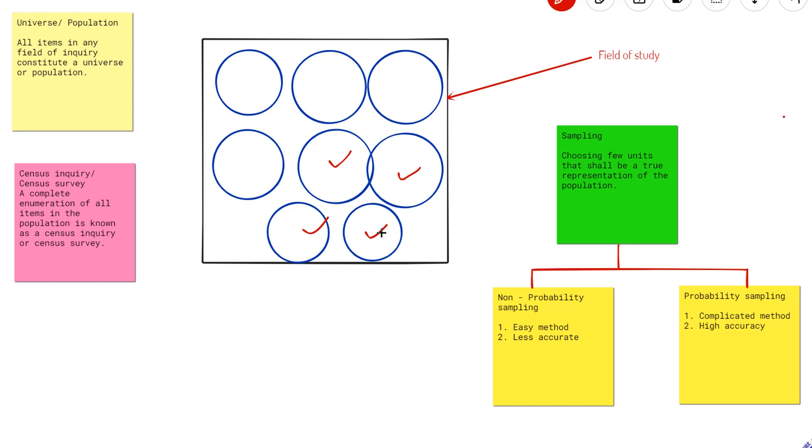Now the problem with sampling is that if the units are not uniform, then the accuracy of the collected data will be less. There are two methods of sampling: one is non-probability sampling and the other one is probability sampling. Non-probability sampling is an easy method, but the accuracy of the data will be very less. With non-probability sampling, it is not possible to draw conclusions, whereas probability sampling uses advanced statistical techniques to evaluate the outcome. As a result, it has high accuracy and the data analyzed using probability sampling is valid.